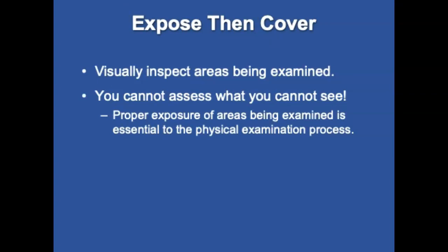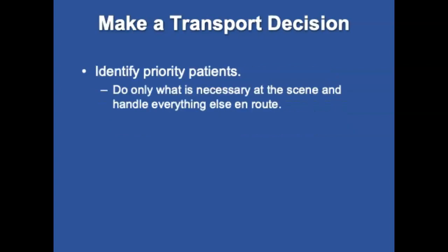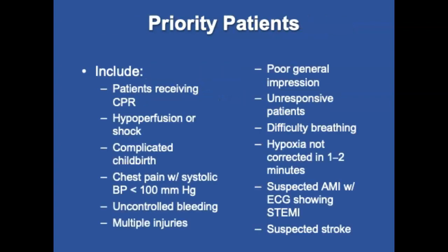E is for expose and cover — visually inspect areas being examined to make an accurate and thorough assessment. You cannot assess what you cannot see. Then make the transport decision. Identify priority patients — those in unstable or potentially unstable condition who need definitive care that cannot be accomplished in the field. Expedite transport by doing only what is necessary on scene. Priority patients include those in CPR or hypoperfusion and complicated births, among others listed on the slide.